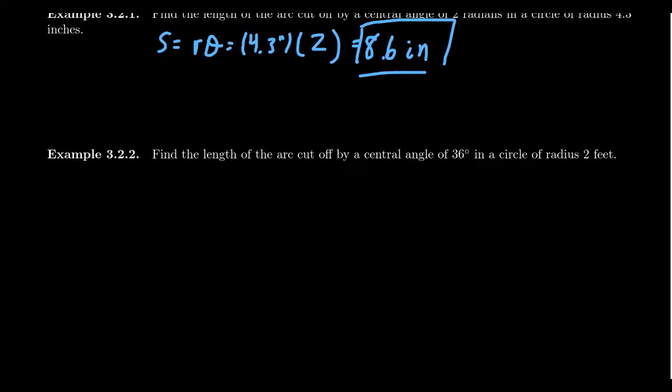This is my case in point: if we want to find the length of the arc cut by the central angle of 36 degrees in a circle of radius of 2 feet, we're going to use our formula s equals r times theta. The radius was given as 2 feet, but then the angle here was given as 36 degrees. If we want to switch to radians, we need to remember that 1 degree is the same thing as pi over 180 radians.